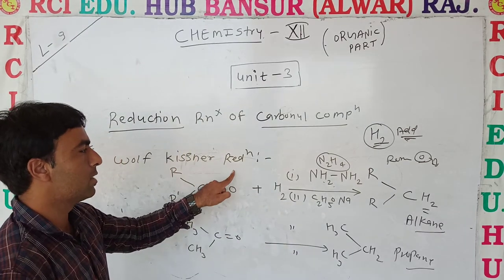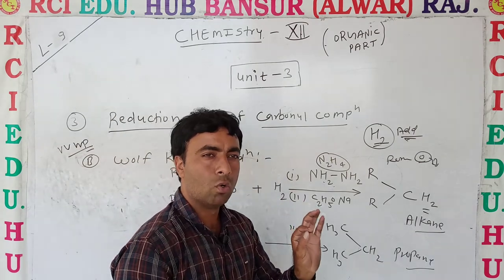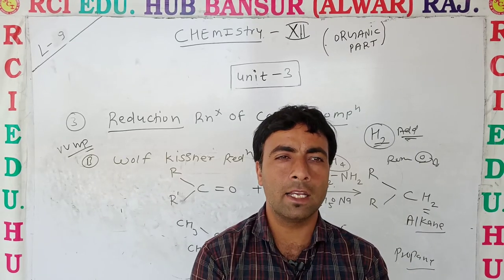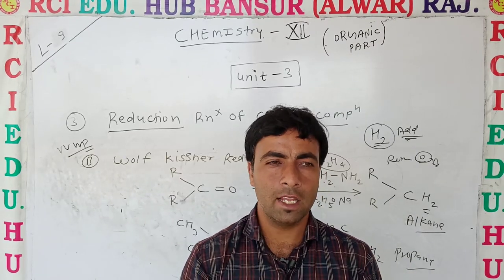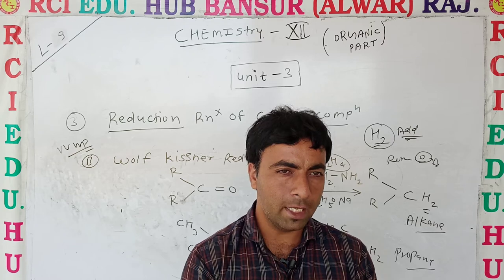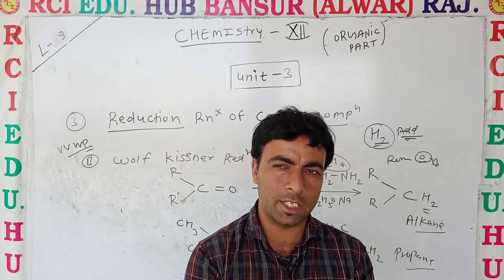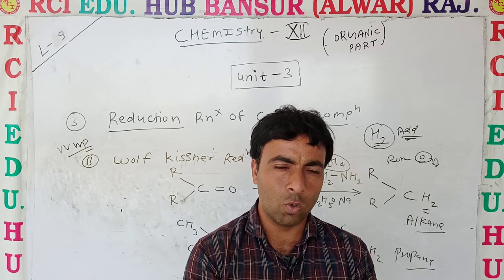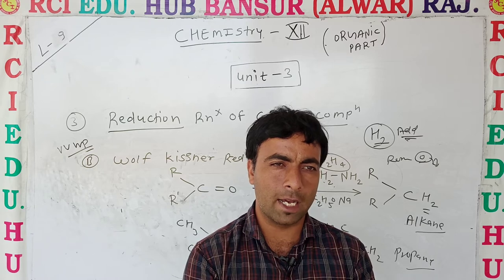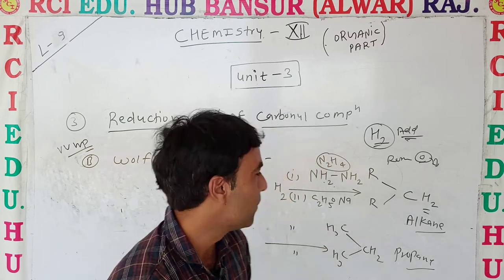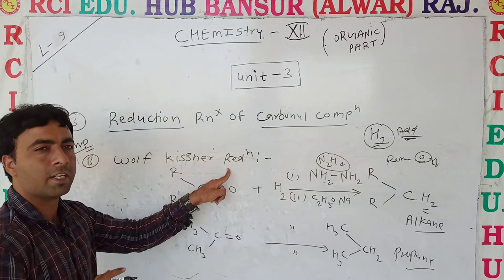Wolff-Kishner Reduction is also called the Huang-Minlon Transformation. The Huang-Minlon Transformation is a modification of the Wolff-Kishner Reduction. They both have the same transformed outcome.